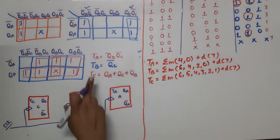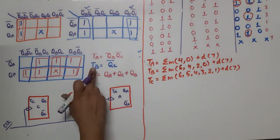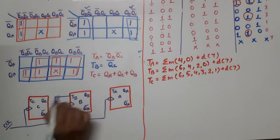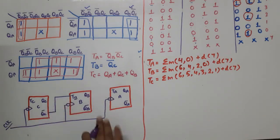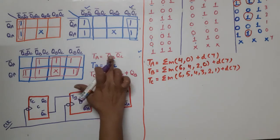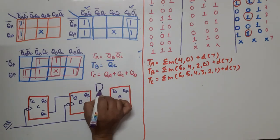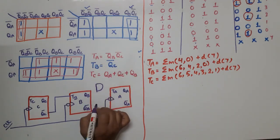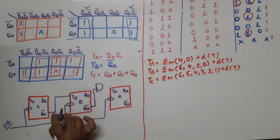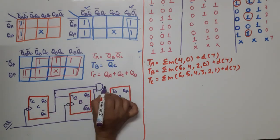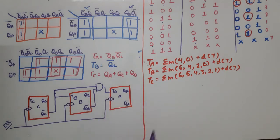Making the connections according to the equations: TB equals QC̄, so QC̄ is directly connected to the TB input. For TA, which equals QB̄·QC̄, we need an AND gate with QB̄ and QC̄ as inputs, and the output connects to TA.